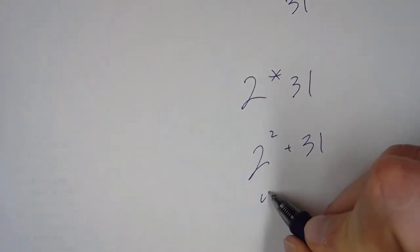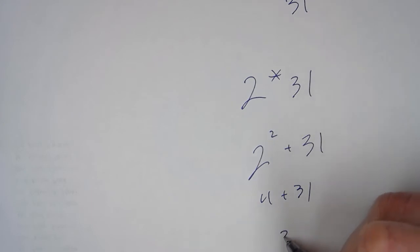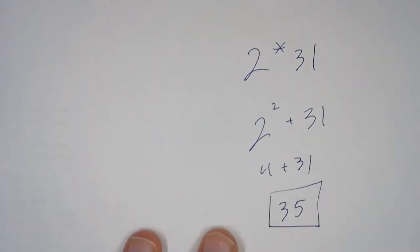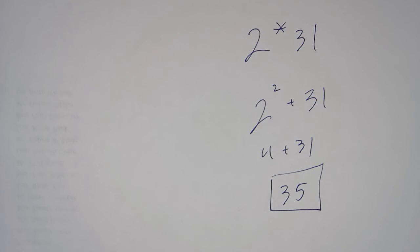So 2 squared is 4, plus 31, gives us a value of 35. There's our answer, and we're done.